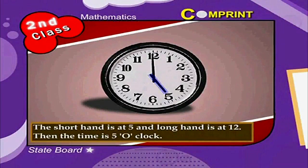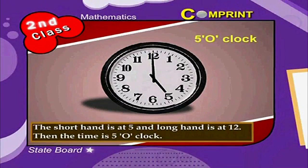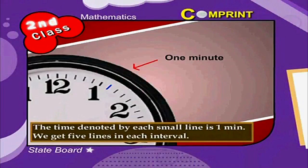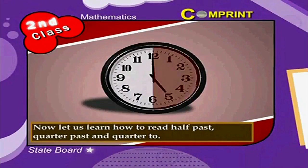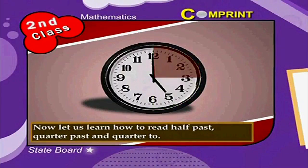Here is an example: the short hand is at 5 and the long hand is at 12, then the time is 5 o'clock. The time denoted by each small line is 1 minute. We get 5 lines in each interval. Now let us learn how to read half past, quarter past, and quarter to.